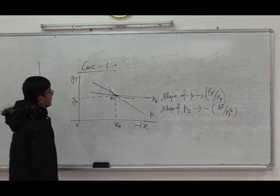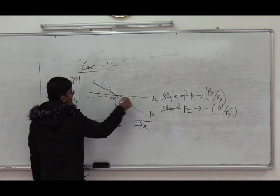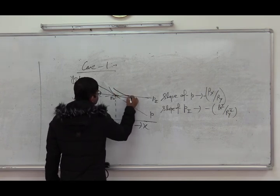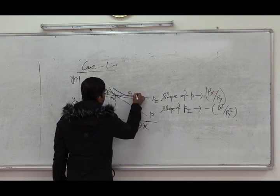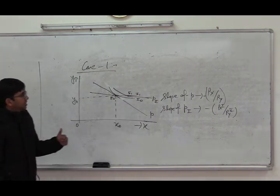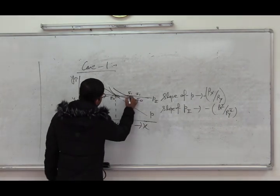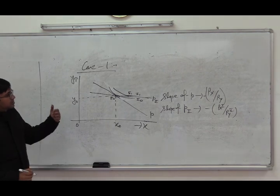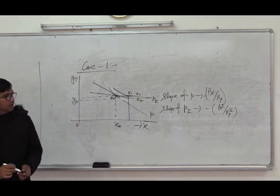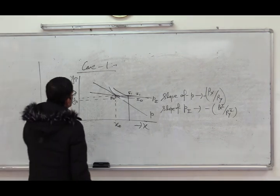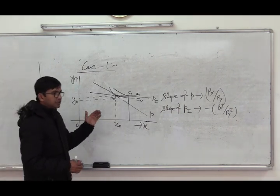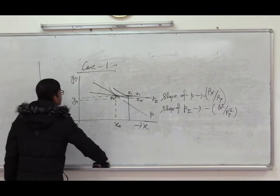The post-trade consumption possibility line is given by the straight line Pi, and the new equilibrium point is E1 on the higher indifference curve I1. The country exports y and imports x. Since production is completely rigid, the country makes gain only through exchange at the international price ratio — there is no specialization gain from trade.